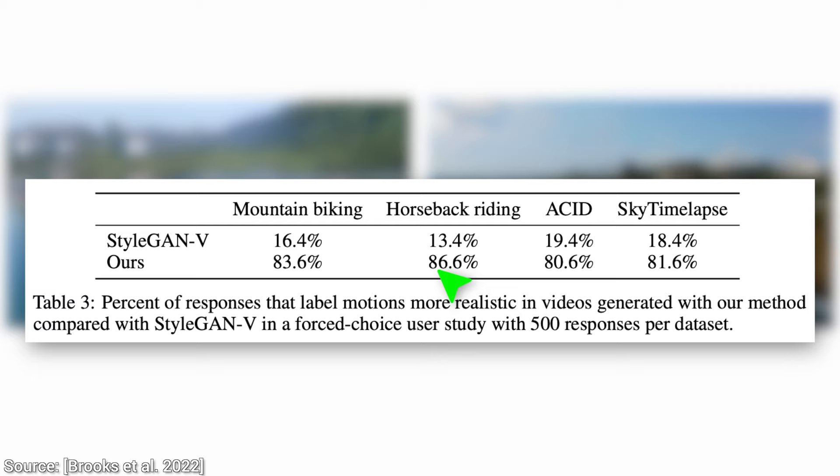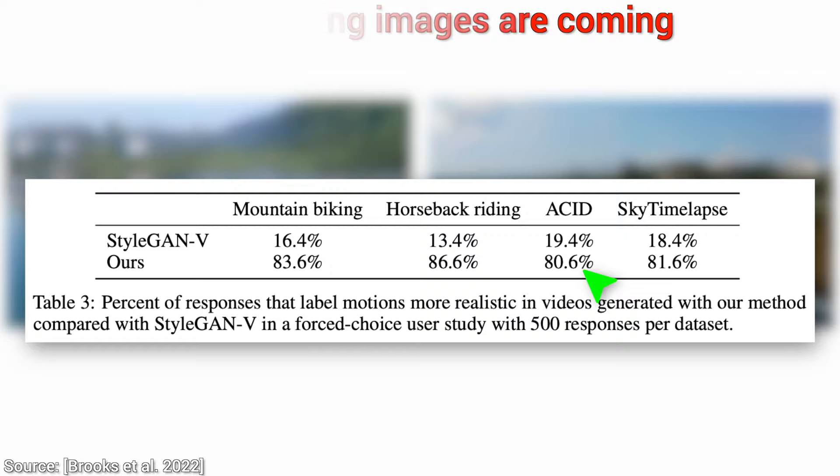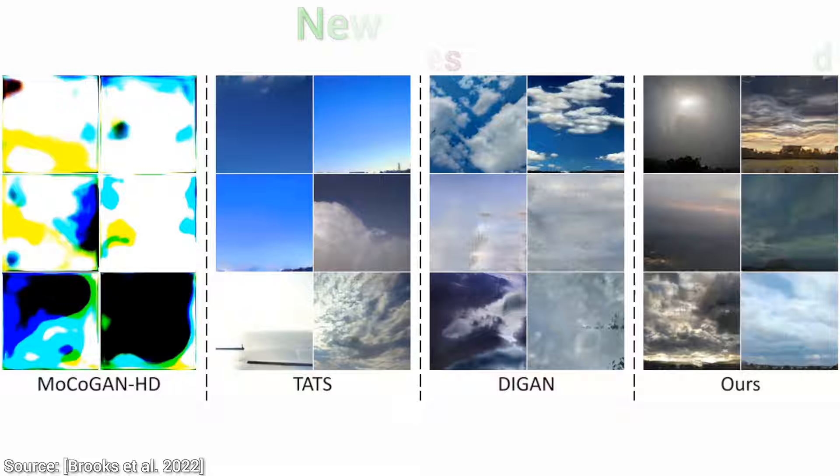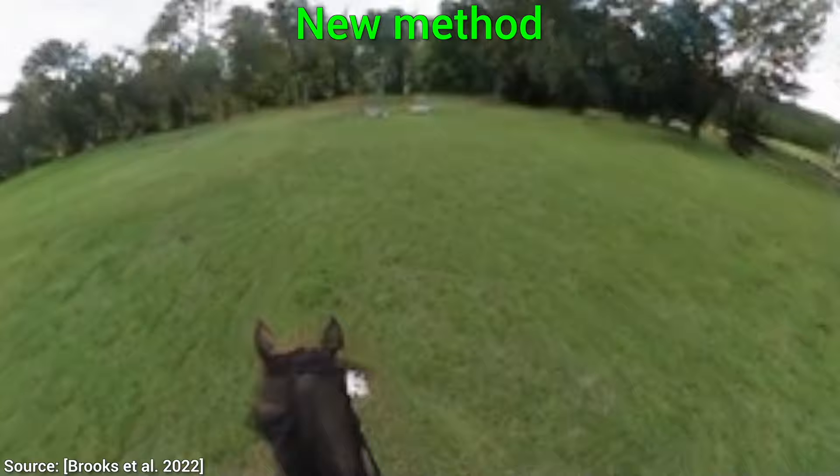That is incredible! And once again, all this progress in AI research in less than a year. Now, clearly, the new technique is not perfect either — it has artifacts, morphing, and other issues as well.